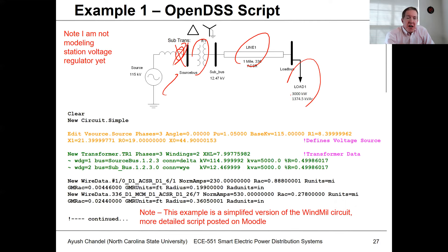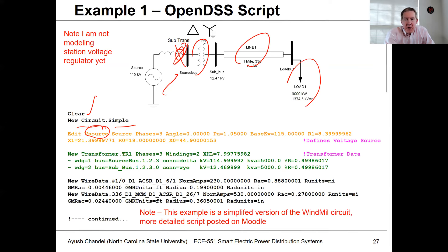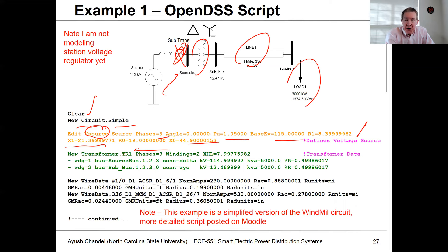When you define this in OpenDSS, you usually start with the 'clear' command, which defines your circuit from scratch — it clears out anything already in memory. Then I set up a new circuit called 'Simple.' Next, I edit the voltage source: I set it up with three phases, a per-unit internal voltage of 1.05 per unit, the base KVA, positive sequence resistance and reactance, and zero sequence values as well. This defines my voltage source.